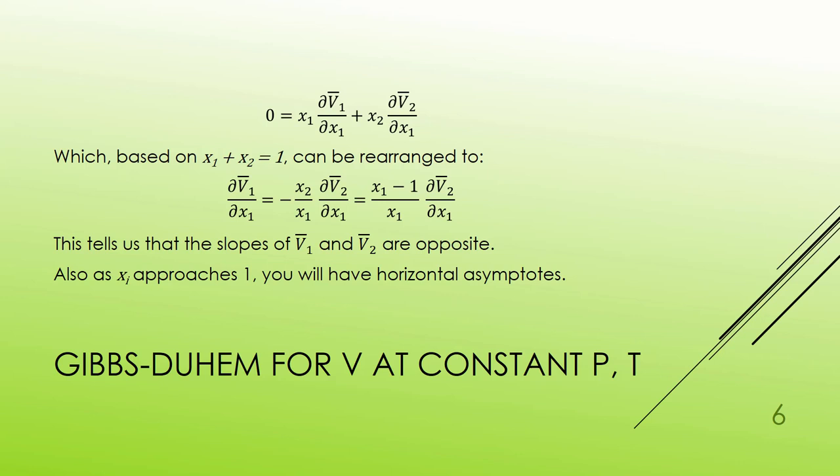I also can look at this and recognize that as X1 or X2 goes to one, as one goes to one, the other goes to zero. Make sure you work that out in your head. But what's going to happen is I'm going to go to fixed values. So, I'm going to end up with horizontal asymptotes as I approach the quantity one.